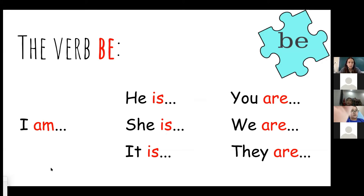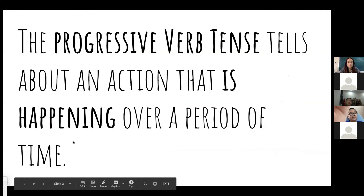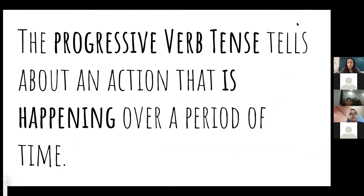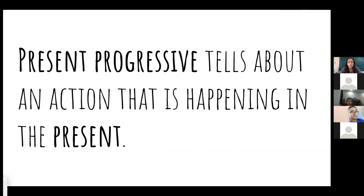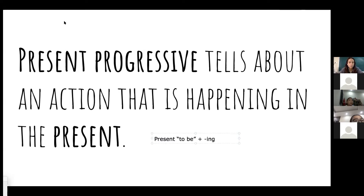These are our forms of the verb 'be' in the present tense — when we're talking about right now. We're going to use these today when we learn about the progressive verb tense. The progressive verb tense tells about an action that is happening over a period of time, something you use almost every day. First, we'll talk about present progressive, which tells about an action happening in the present.